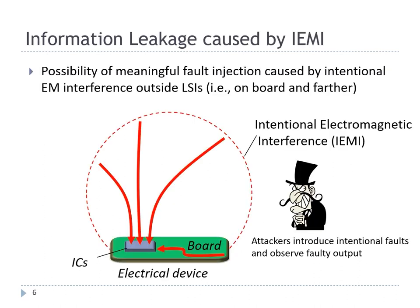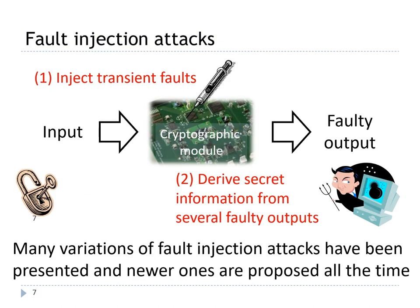Next, we focus on information leakage caused by intentional electromagnetic interference. These attacks are called active attacks. Unlike high-power electromagnetic environments, these attacks do not completely break the equipment. An attacker can cause a temporary fault in the device and induce information leakage. In this type of attack, attackers first inject a transient fault into intermediate data during operations, then obtain a faulty output, and derive secret information from several faulty outputs.